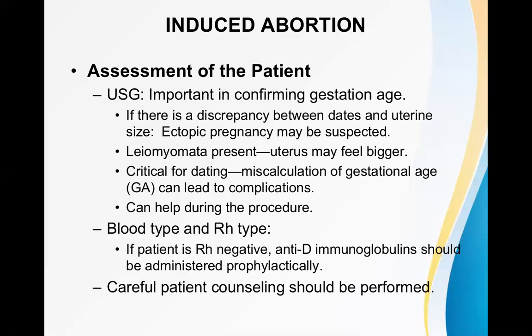For example, if the lady says her LMP was 12 weeks ago but the uterine height is not consistent with gestational age, there may be no intrauterine pregnancy — the pregnancy may be in the fallopian tube. Also, leiomyomata (multiple leiomyomas, which are benign tumors) present alongside the baby can make the uterus feel bigger, so we must confirm the exact gestational age.